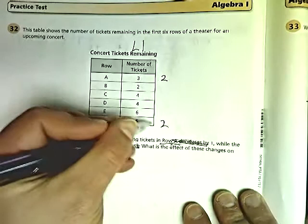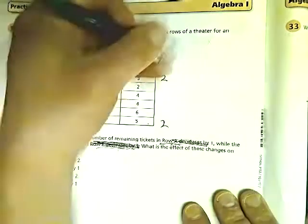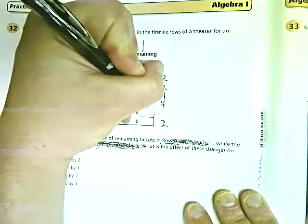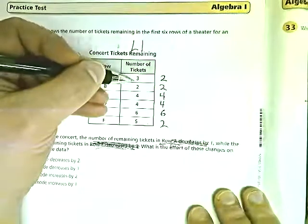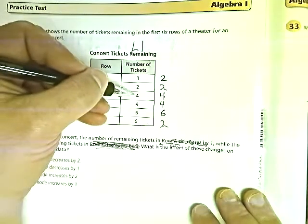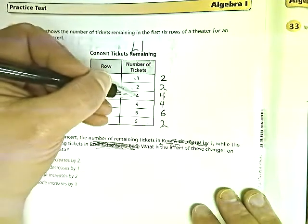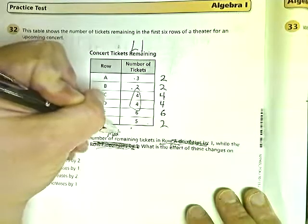So I did 5 minus 3, by the way, to get 2. What effects will these changes have on the mode? So everything else, by the way, that you don't fiddle with in the question stays the same. So if we're doing mode, we look for the one that popped up the most. Which in this case, there's 1, 3, a 2, 2, 4's. So my original mode is 4.